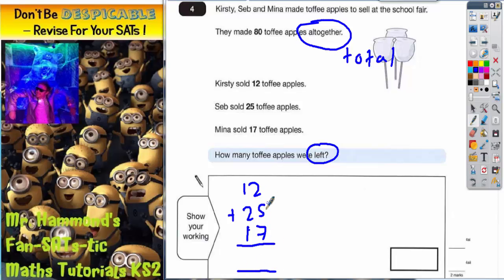So we've got 5 and 7 is 12, plus 2 is 14. Put your 4 in, carry your 1. 1 plus 2 is 3, plus 1 is 4, plus the extra 1 is 5. So that means they sold 54 toffee apples.